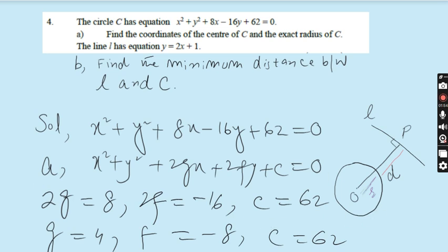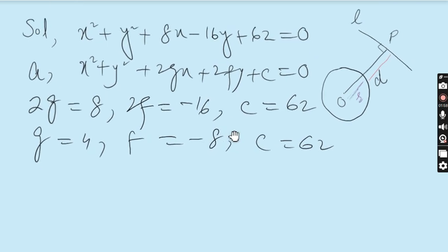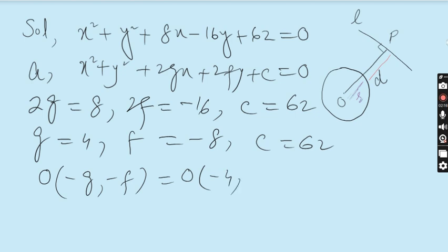For the general equation of the circle, the formula for the coordinates of the centre is (−g, −f). So: g is 4, giving −4; and f is −8, giving −(−8) = +8. Therefore the centre of the circle is (−4, 8).